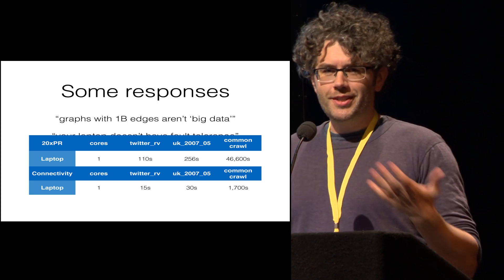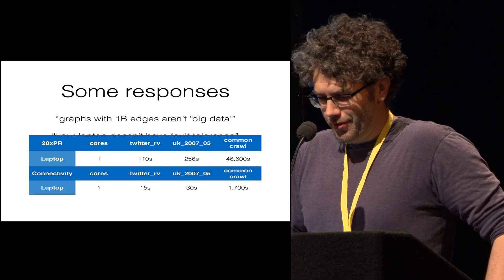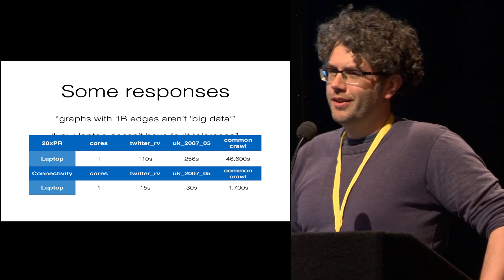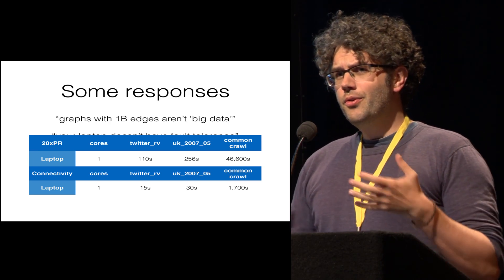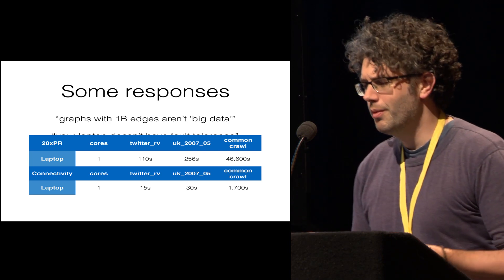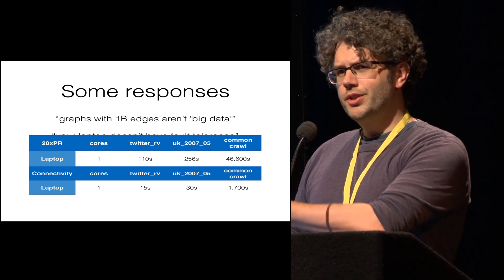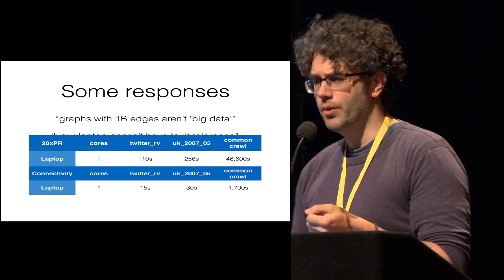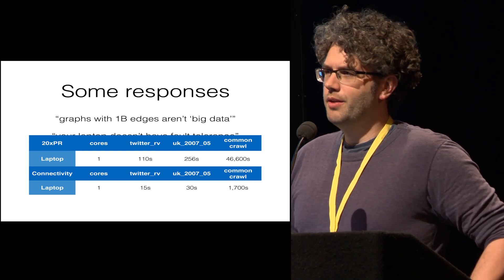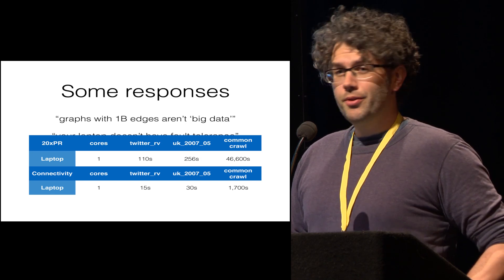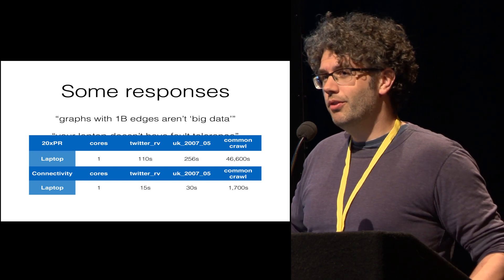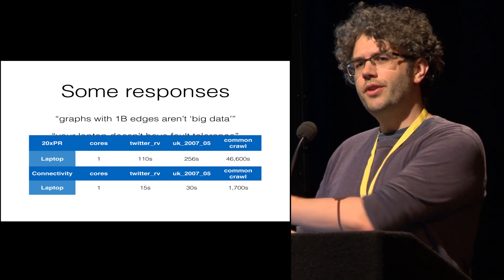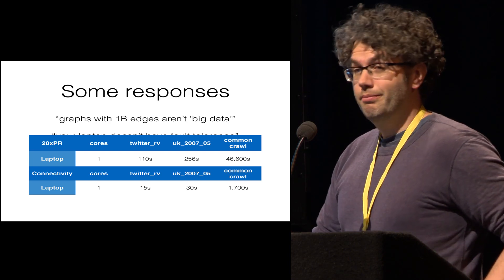Point two: maybe your laptop doesn't have fault tolerance. That's absolutely true — your laptop isn't going to give you multi-site resilience. On the other hand, you have to worry about whether this is the tail wagging the dog. People build systems with hundreds of machines. If the only reason they're using so many machines is to recover the performance they lost in making things fault tolerant, you might be on the wrong end of a vicious cycle. In a big data batch computation setting, fault tolerance is fundamentally a performance optimization — you can always restart the computation.